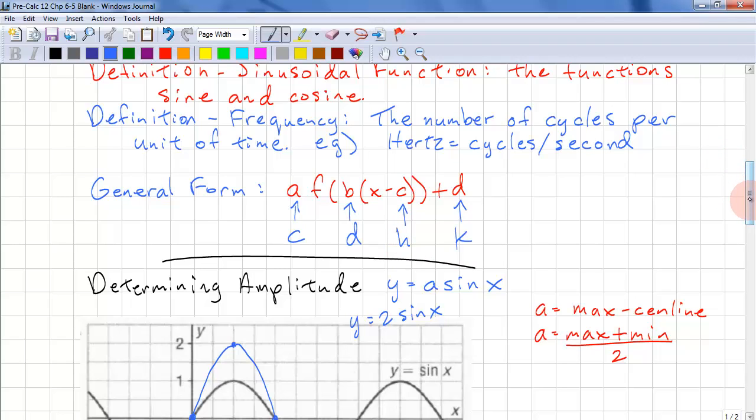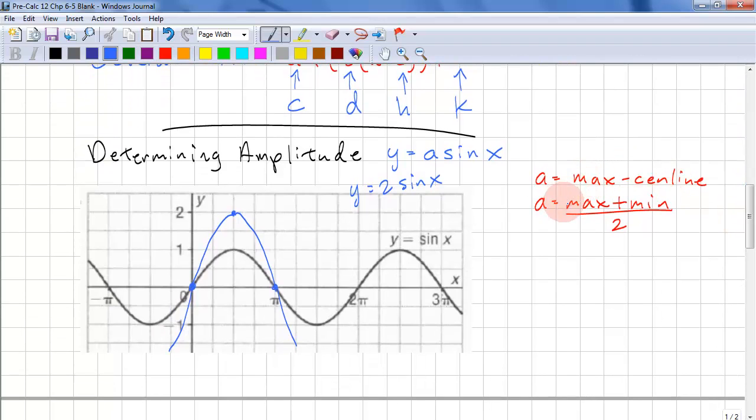How do we determine these characteristics from graphs? We can have the amplitude as max minus center line, or we can do max plus min divided by 2. For this curve we have 2 minus the center line, which is 0, so a equals 2. This one is y equals 2 sin x. For sin x we can also do max minus min, so 1 minus negative 1 divided by 2, which is 2 over 2, that's 1. When there's no number in front, it's implied that it's a 1.